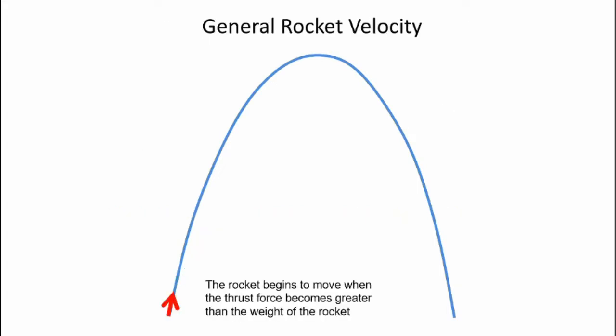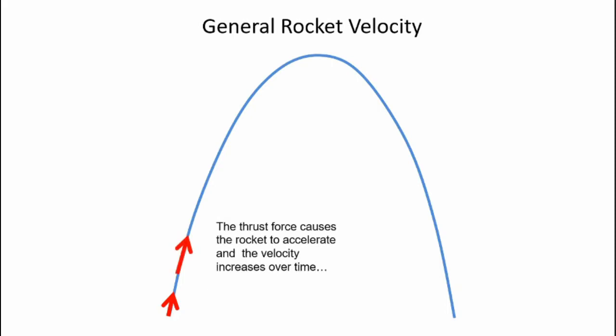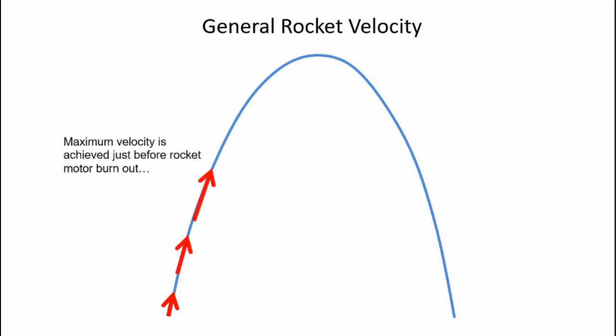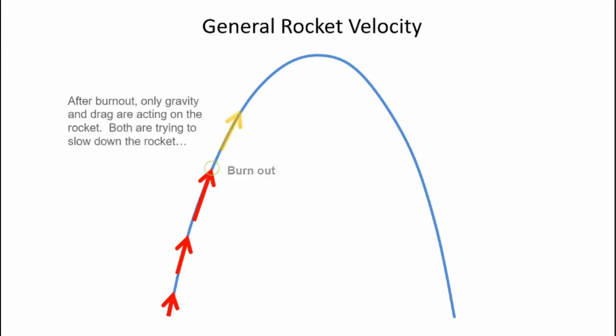This is what the velocity looks like over the trajectory. The thrust accelerates the rocket, causing the velocity to increase. Maximum velocity is usually achieved just before motor burnout. After burnout, drag and gravity begin to slow the rocket.